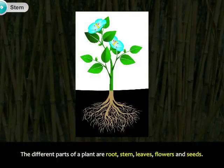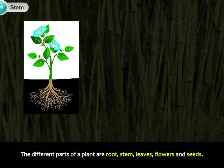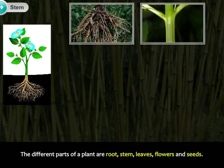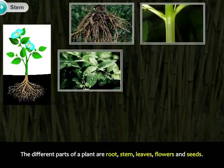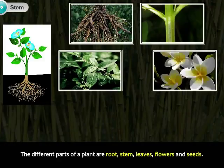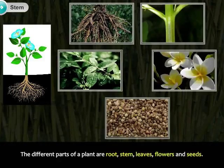The different parts of a plant are root, stem, leaves, flowers, and seeds.